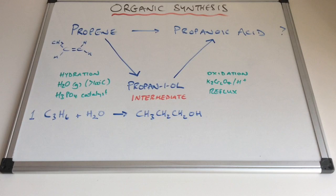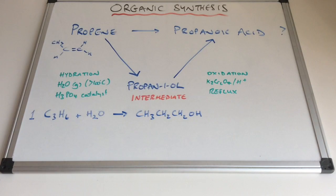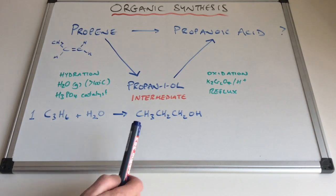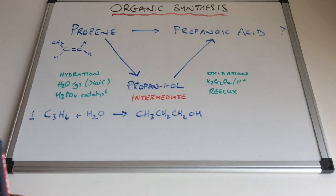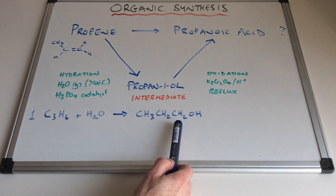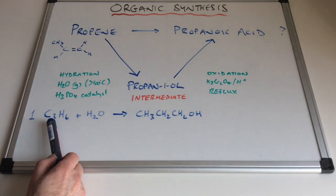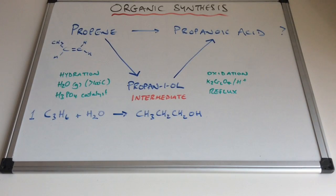The problem with that is if you've got propan-2-ol, when you oxidise it you're going to end up with a ketone, because propan-2-ol is a secondary alcohol. So it's really important that you create propan-1-ol in step one. The best way to show that in your equation is to draw a structural formula, leaving the examiner in no doubt that you know it has to be propan-1-ol.